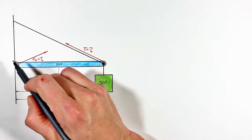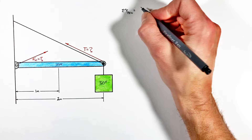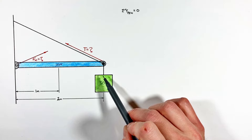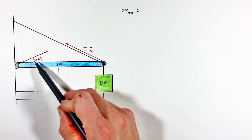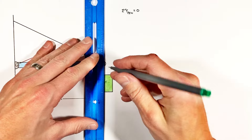We're going to start by looking at the sum of all torques around this pin. In order for this beam and this block to remain static, we need the sum of all torques around this point — as well as any other point — to equal zero. There are actually four forces in this problem: the first being the force by the wall, the next being the tension of the cable, and the last two being the weight or force by gravity on each of these objects.